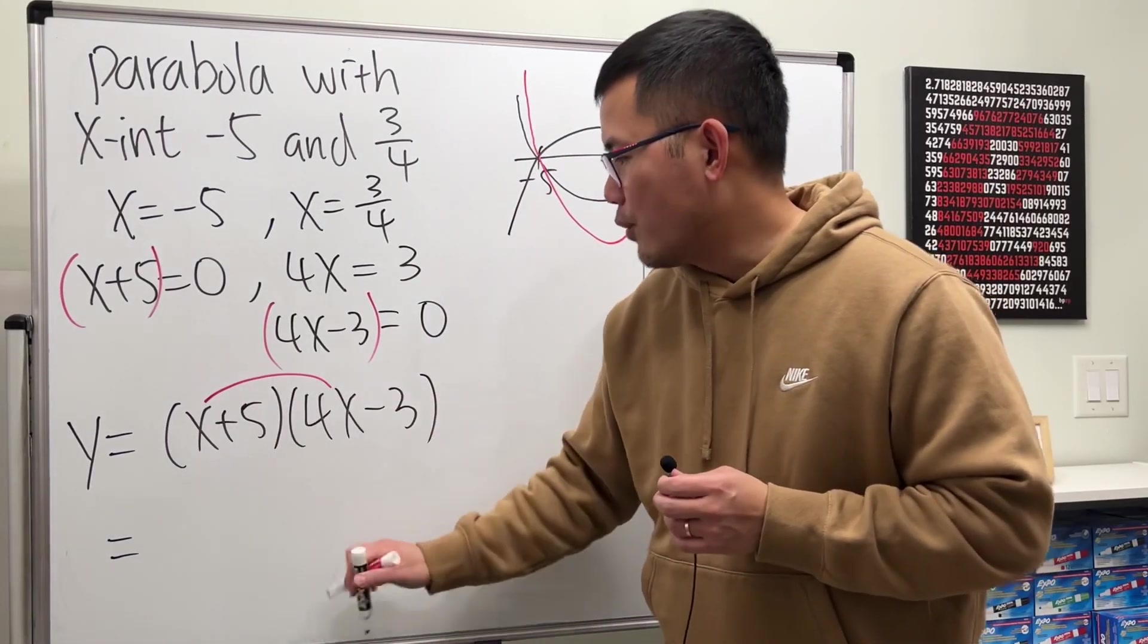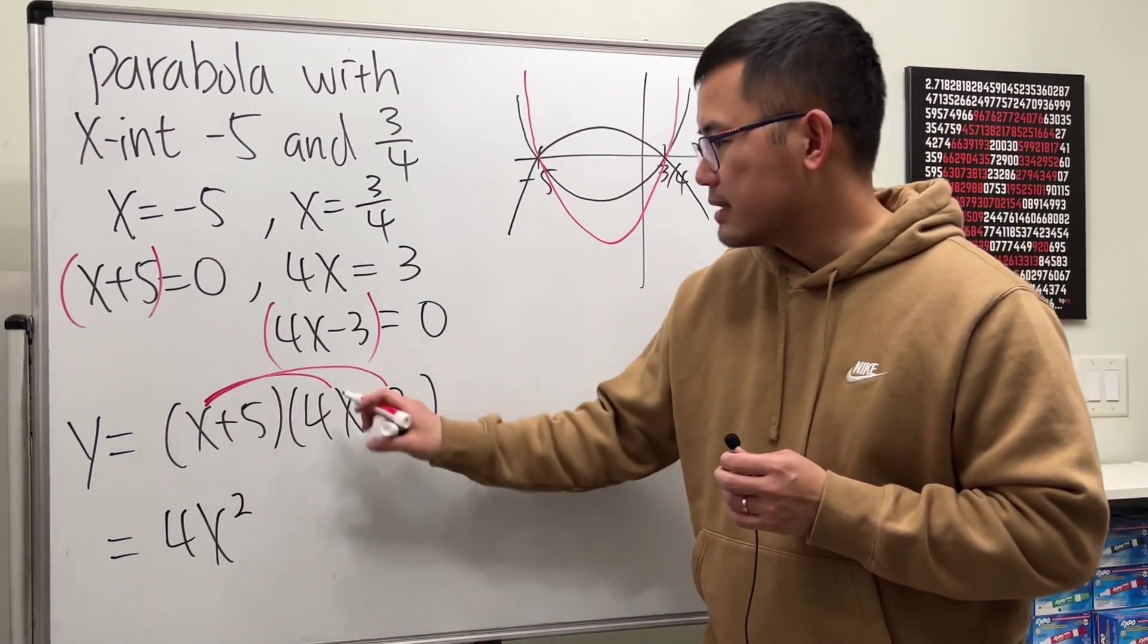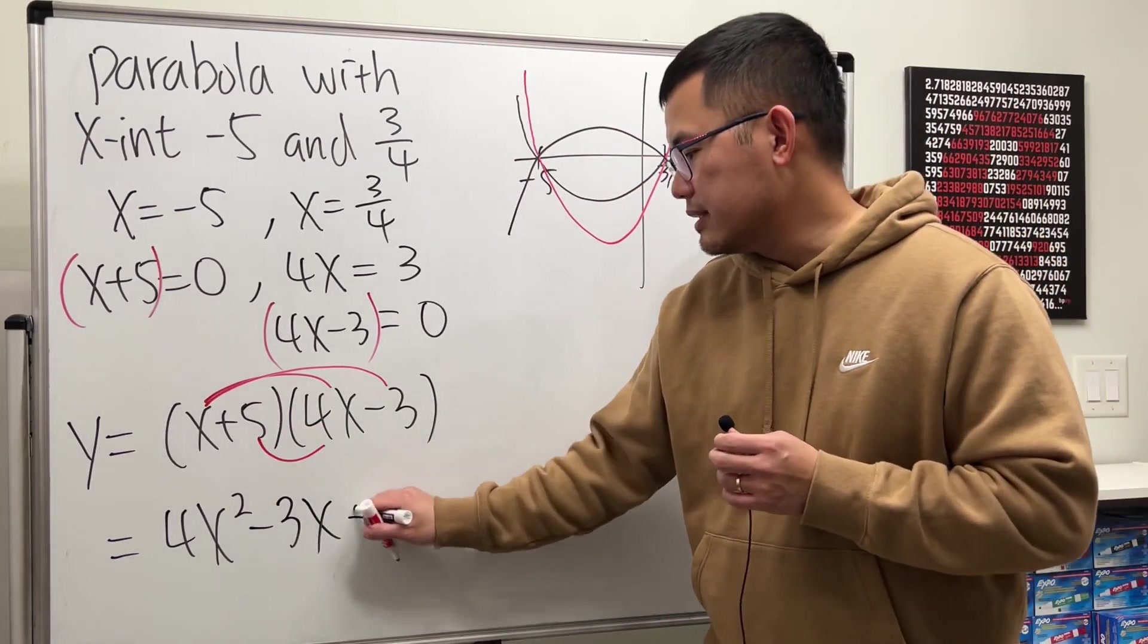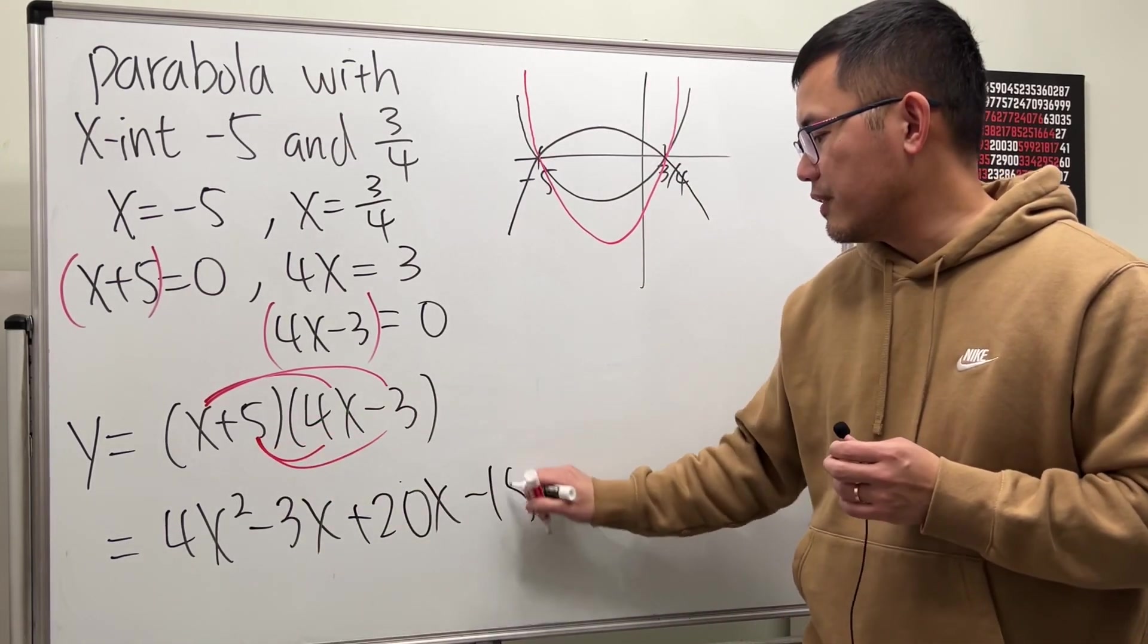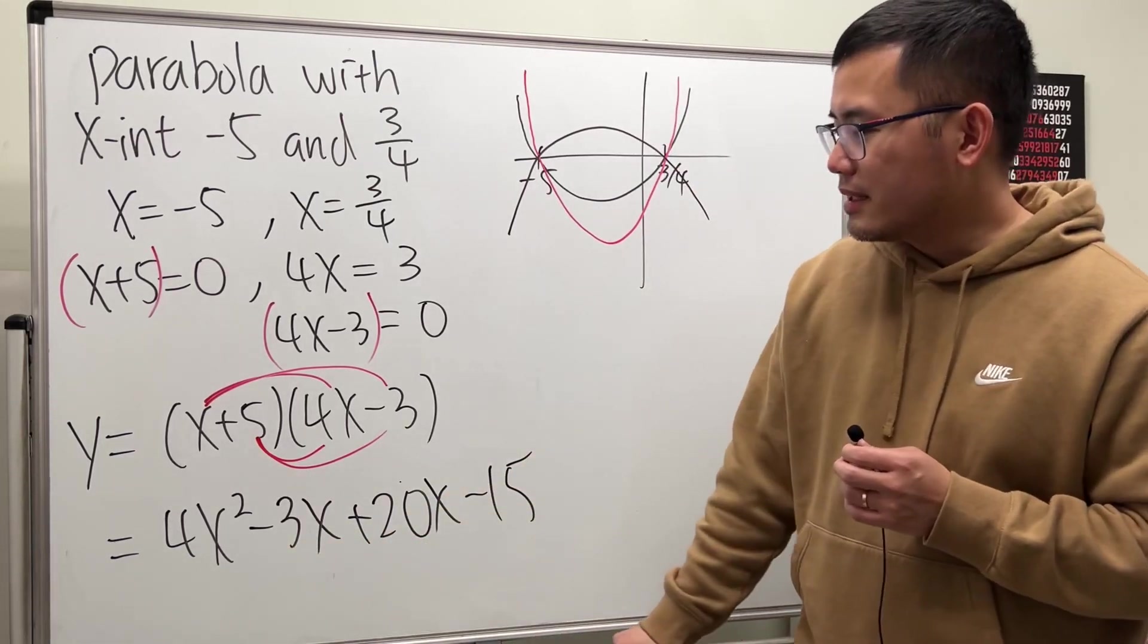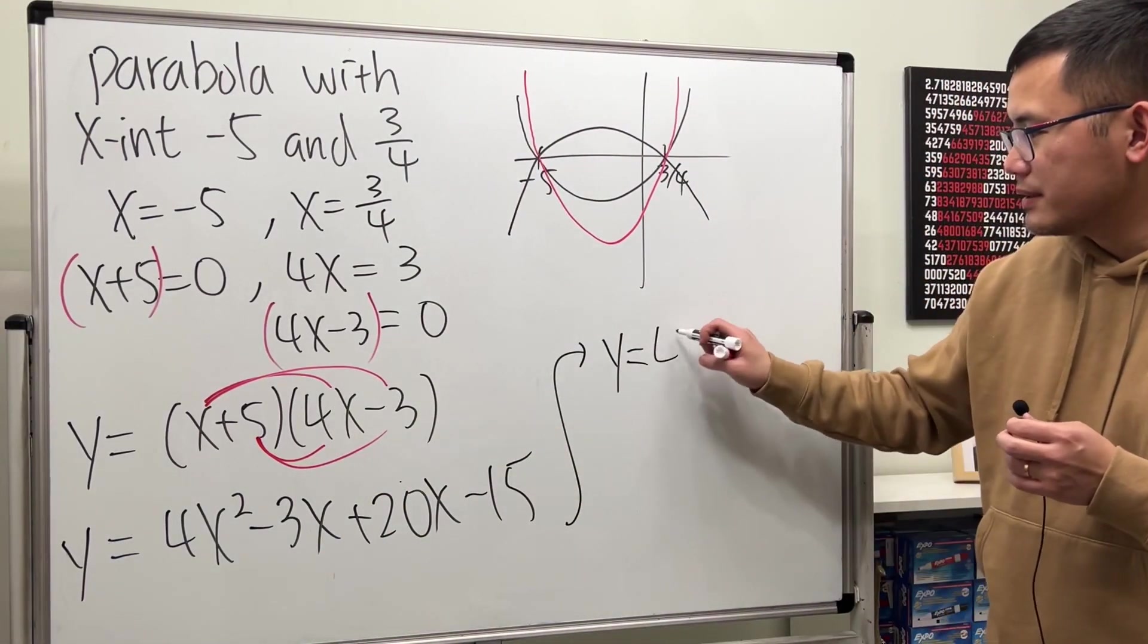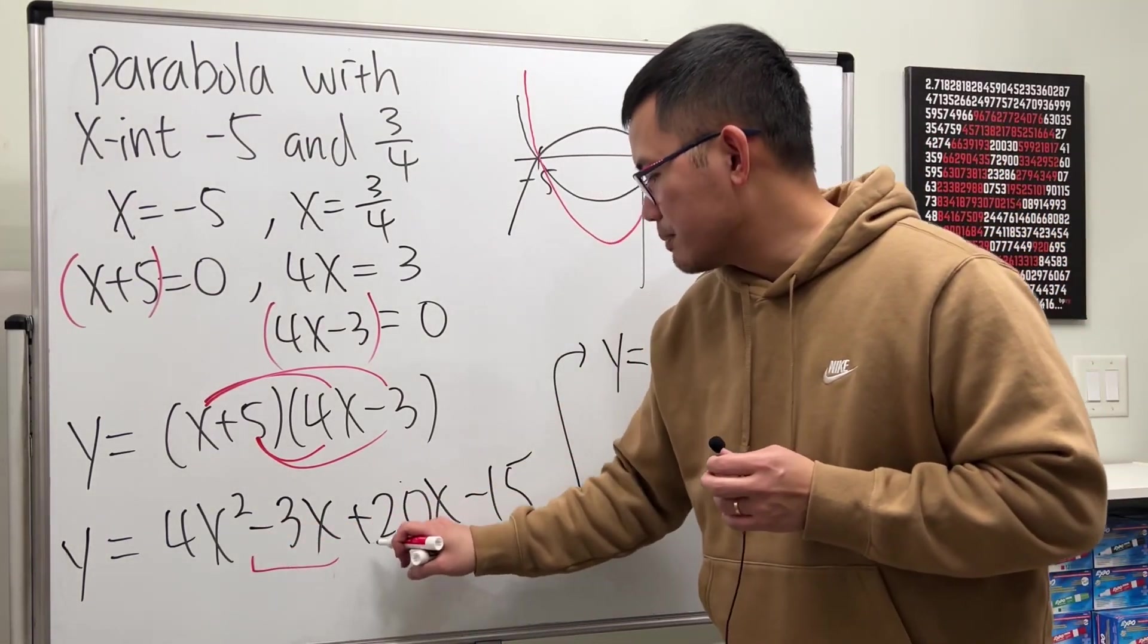x times 4x, we get 4x squared. x times negative 3, that's negative 3x. 5 times 4x, that's plus 20x. And lastly, this times that is negative 15. And of course, we see that this and that can be combined, so we get, let me just put it down right here...